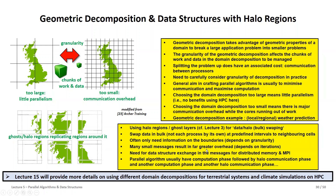Sending many small messages creates far greater overhead. This is where MPI data types come in — instead of exchanging one big message again and again, you define a type once. In iterative methods, for example, the current time step affects the next: you have a computation phase, then a halo communication phase to inform neighboring processors and receive their data so you can compute your next time step. We'll come back to this in Lecture 7 with stencil methods and hybrid codes.